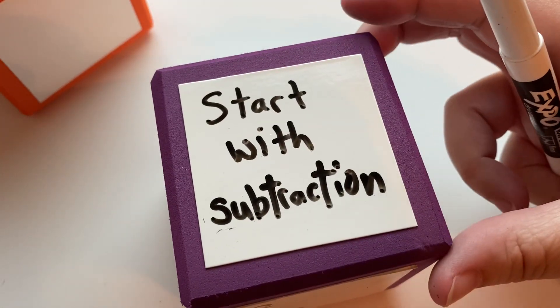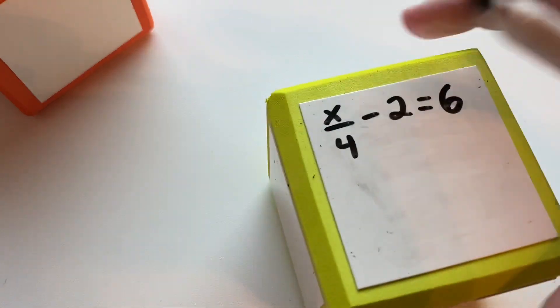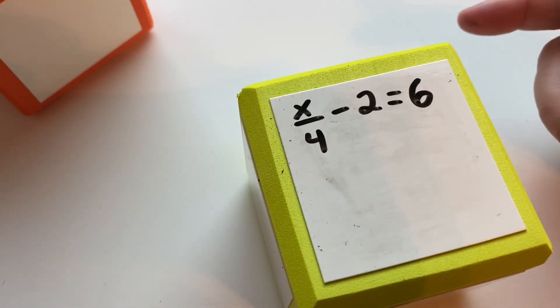So we're going to start with the subtraction, which in this case means you'll be adding to both sides. So let's look at our first example. x divided by 4 minus 2 equals 6.